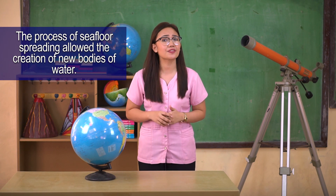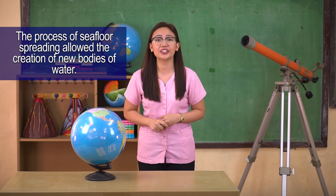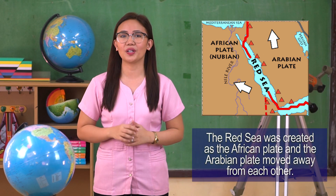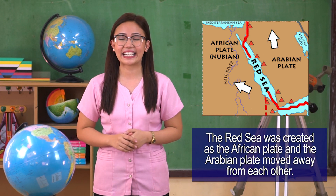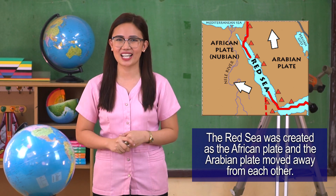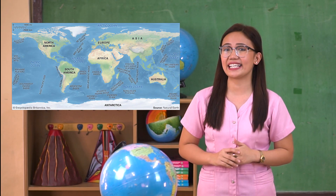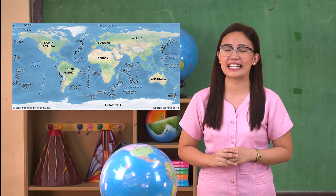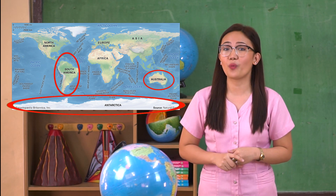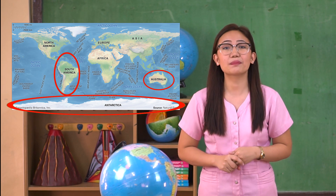Over time, the new oceanic crust pushes the old oceanic crust farther from the ridge. The process of seafloor spreading allowed the creation of new bodies of water. For example, the Red Sea was created as the African Plate and the Arabian Plate moved away from each other. Seafloor spreading is also pulling the continents of Australia, South America, and Antarctica away from each other at the East Pacific Rise.